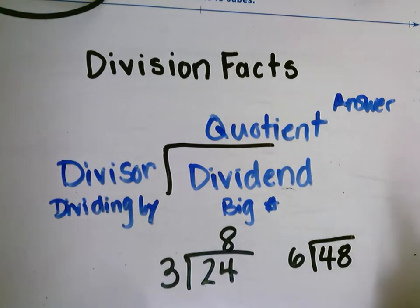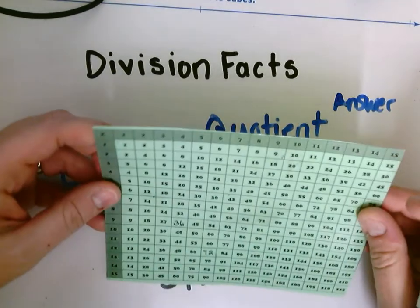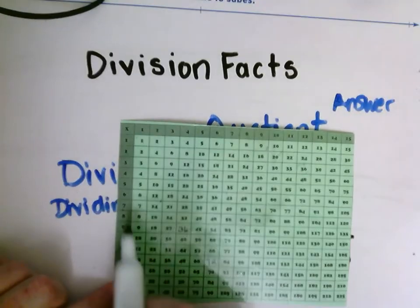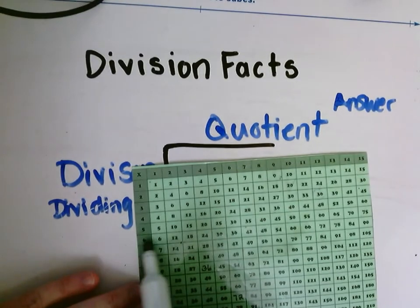I could use my double-double fact or my times 5 plus 1 fact. The different strategies we use for multiplication can help us with division. I can also use my division chart. I would go across that 6, that's my divisor, across the 6 till I hit 48 and find my answer.